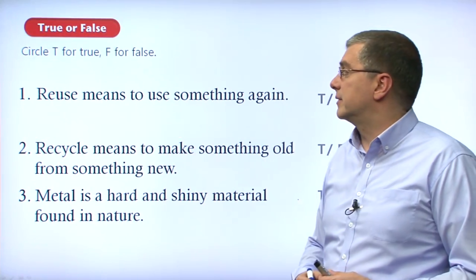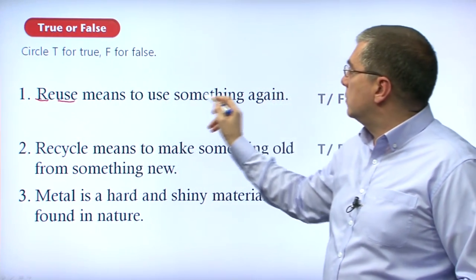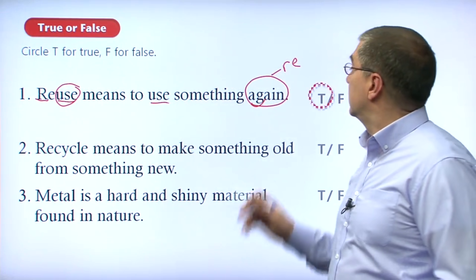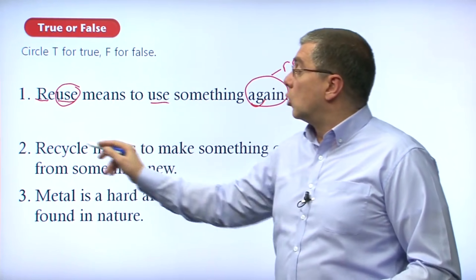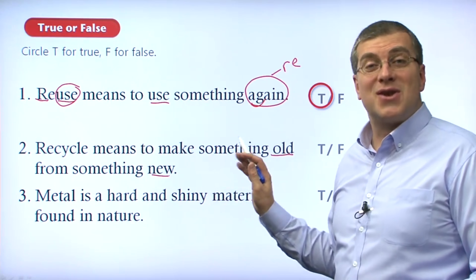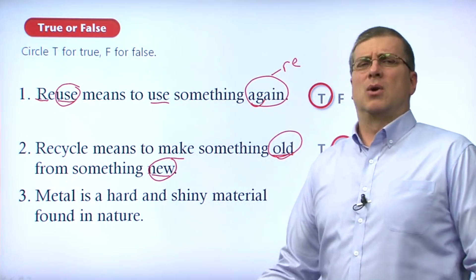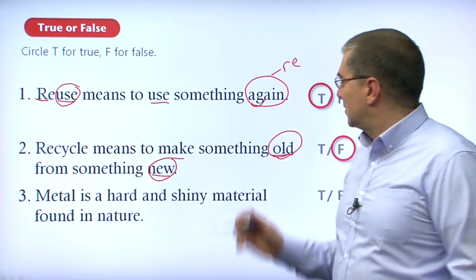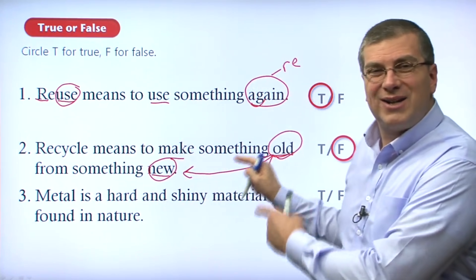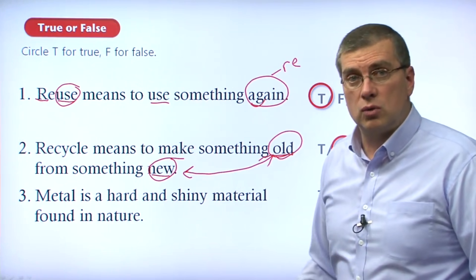We've come to our true-false questions. Number one: reuse means to use something again. Sometimes we say re, and use means to use — that's true. Reuse means to use something again. Number two: recycle means to make something old from something new. That is false — think about it. You don't want to make something old. Recycle means to make something new from something old. They switched those two words around to trick you. Number three: metal is a hard and shiny material found in nature. Metal is hard and shiny, found in nature — for example, gold, silver, and copper. That is true.